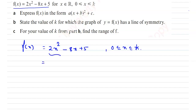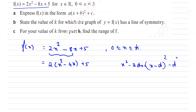From the first two terms, take 2 outside: 2 times (x squared minus 4x) plus 5. We know that x squared minus 2bx equals (x minus b) whole squared minus b squared. Comparing, x squared minus 4x gives us 2b equal to 4, hence b equal to 2. So the expression becomes (x minus 2) whole squared minus 4.